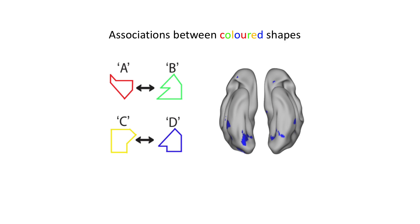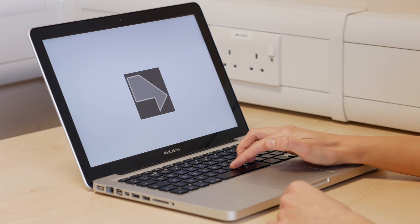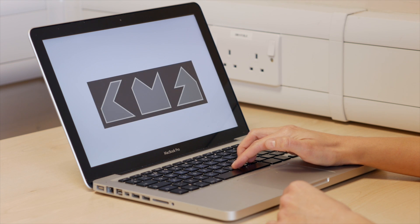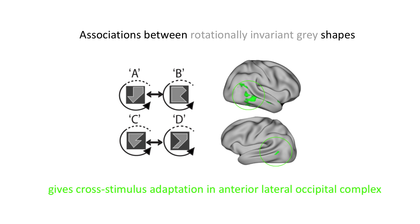Using this approach, we found that we can measure associative memories in a number of different cortical regions immediately after learning. For example, when participants associated coloured shapes, we observed cross-stimulus suppression across an extensive region of visual cortex. But when they associated rotationally invariant grey shapes, we observed cross-stimulus suppression in anterior lateral occipital complex, which has previously been shown to represent rotationally invariant features.